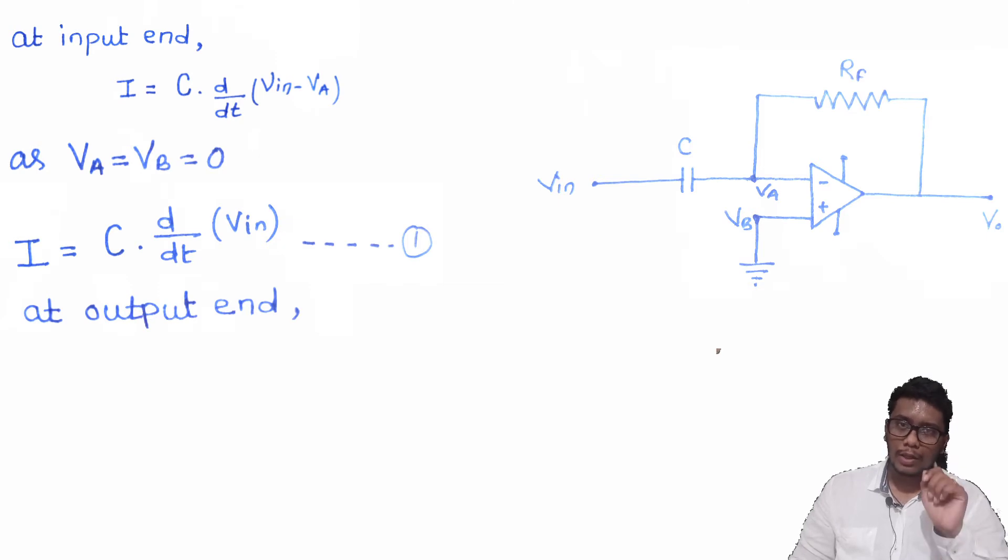The value of current flowing through the VA to V0 is equals to (VA minus VO) upon resistor R, which is a feedback resistor. So VA minus VO upon RF. This is the value of current at the output end.